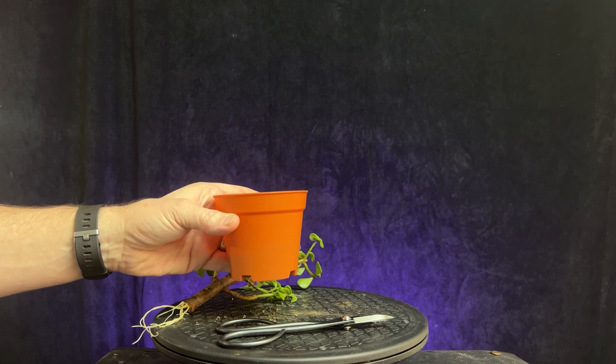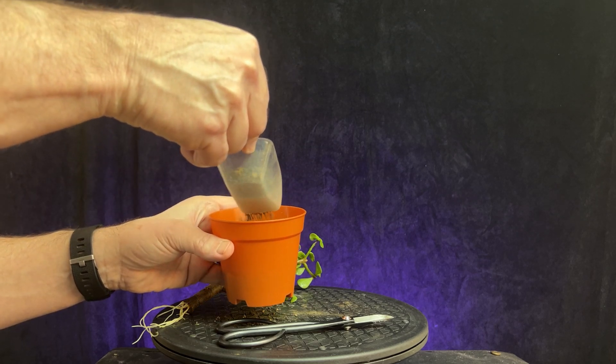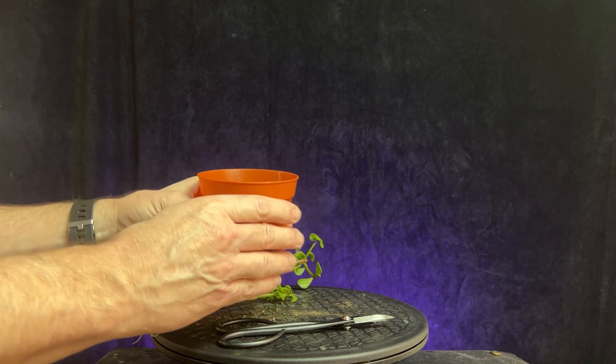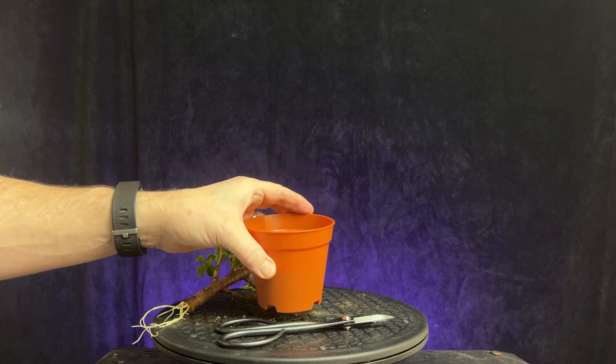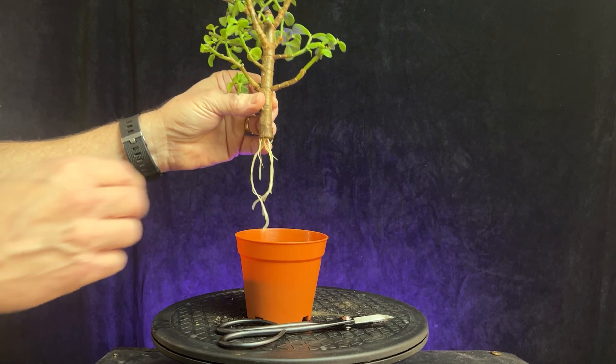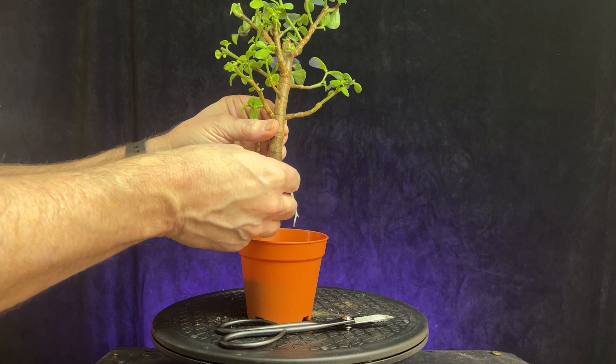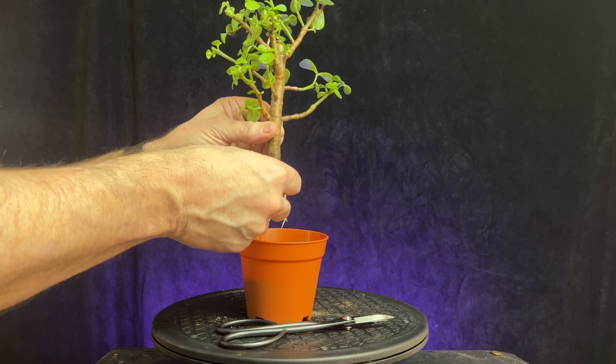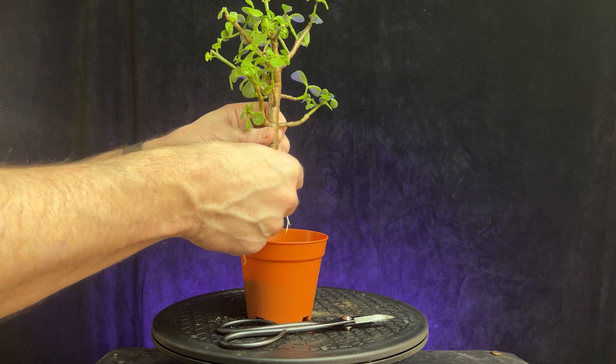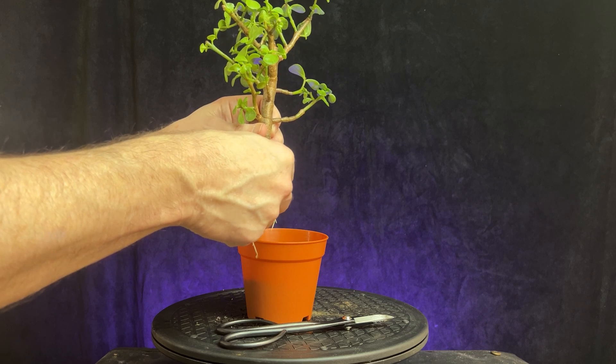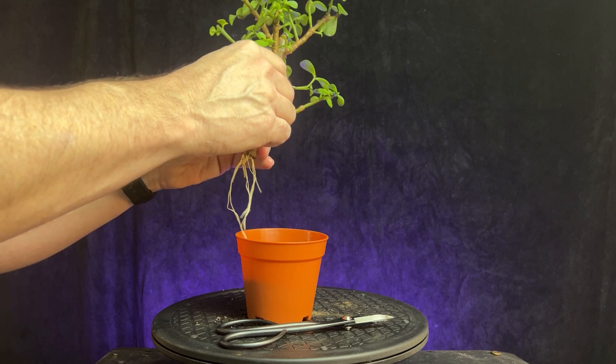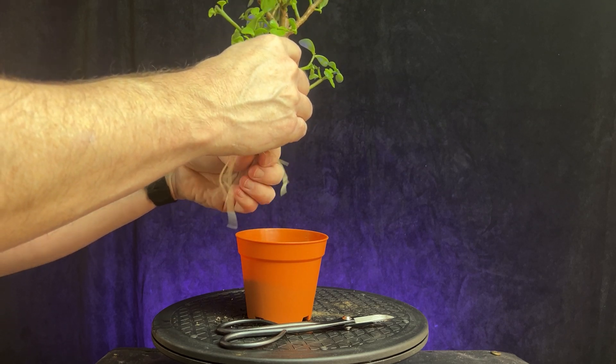You might lose a few in the bottom, but the soil I'm using is just Akadama and black lava. You can see some of the fines are falling through the bottom, which isn't a big deal. I'll fill this up about a third of the way. And we'll pot this up. I like to spread the roots out a little bit, try to get them in as much of a radial pattern as I can, just to start them off on the right foot.